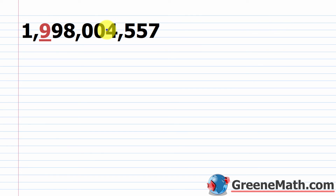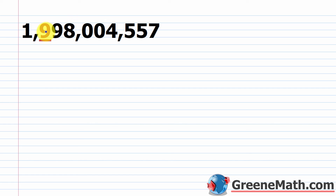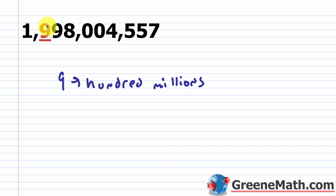Let's look at one more: 1,998,004,557. The underlined digit is one of the nines. You could read the number and recognize this is 1 billion, then divide by 10 to get 100,000,000 — so you immediately know that nine is in the hundred millions place. Or you can work from the right: ones, tens, hundreds, thousands, ten thousands, hundred thousands, millions, ten millions, hundred millions. So this specific underlined nine is in the hundred millions place. The nine to its right would be in the ten millions place, but we're only concerned with the underlined one.